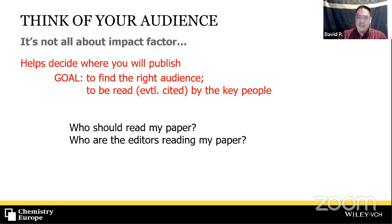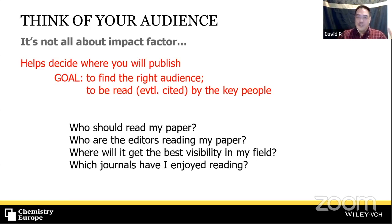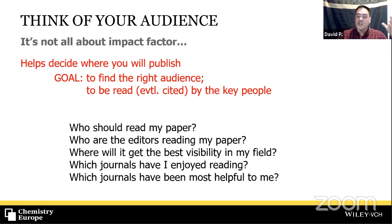Ask yourself: who are the editors reading my paper? Are they active researchers? What are their specializations? Where will it get the best visibility in your field? Which journals have you enjoyed reading? When you answer all these questions, you are thinking of your audience, and it should help you decide where you publish your work and help shape the content to reach your target audience.